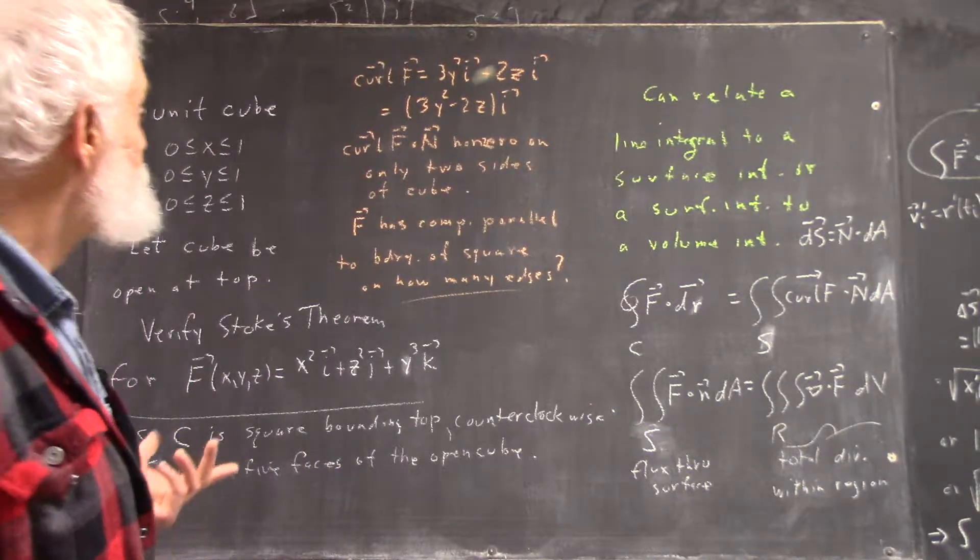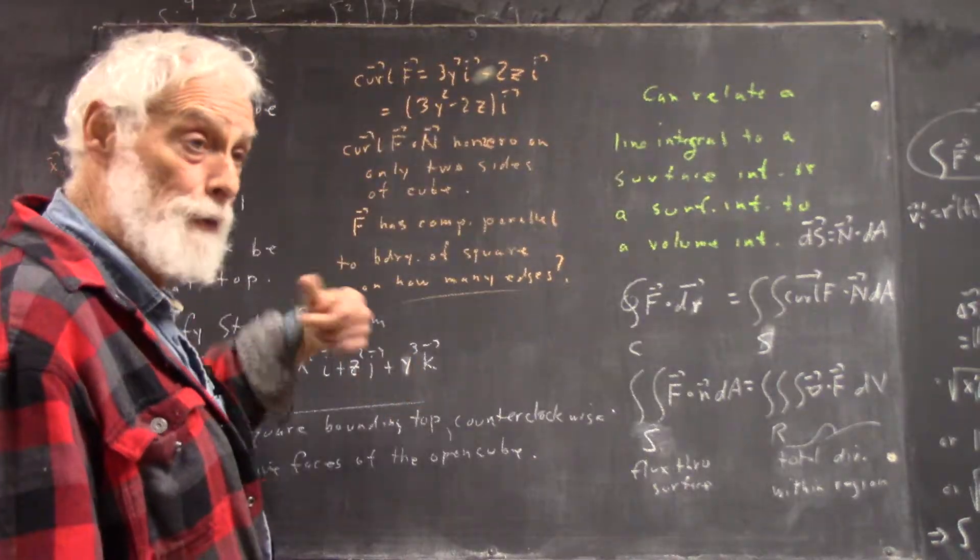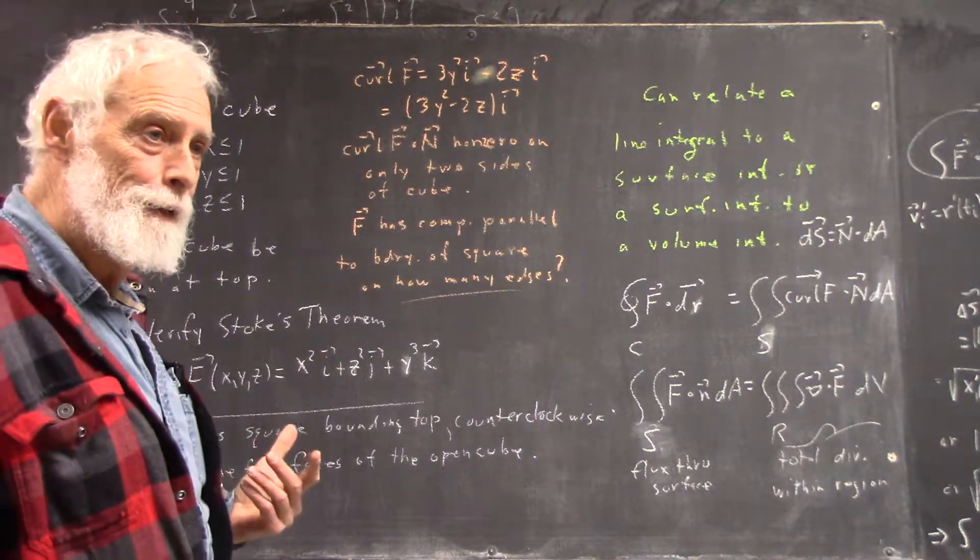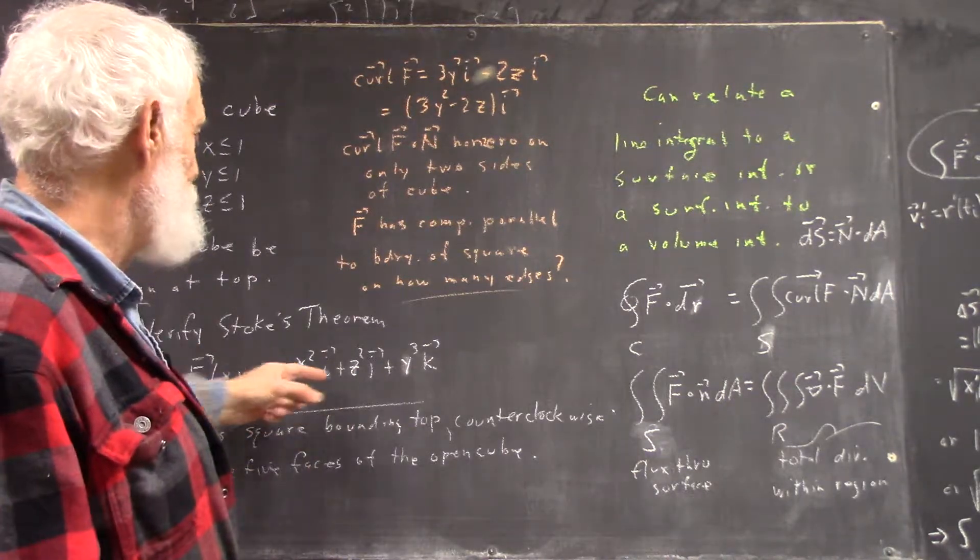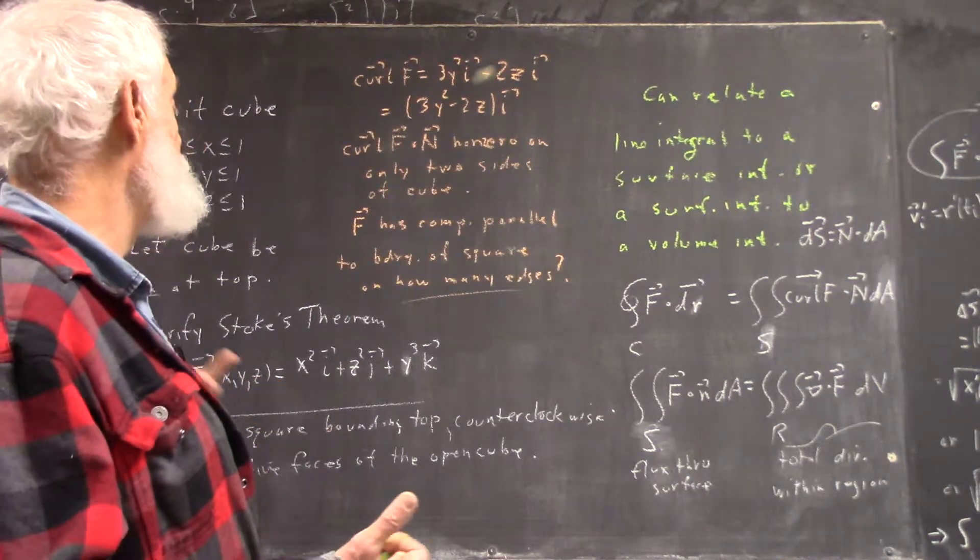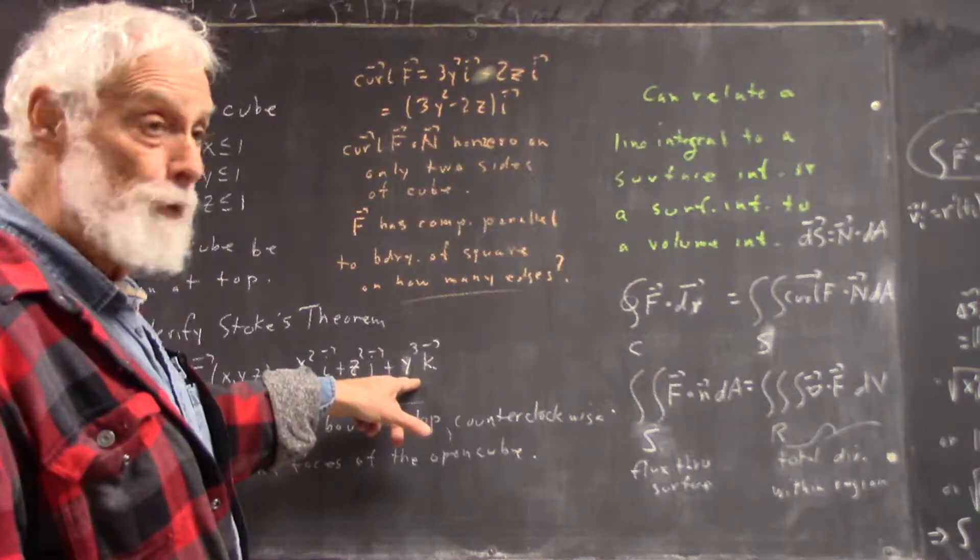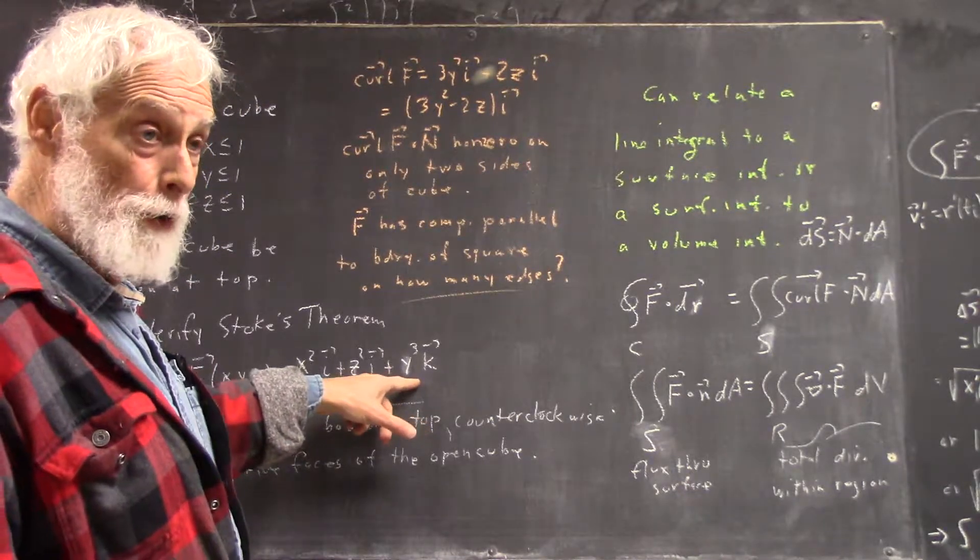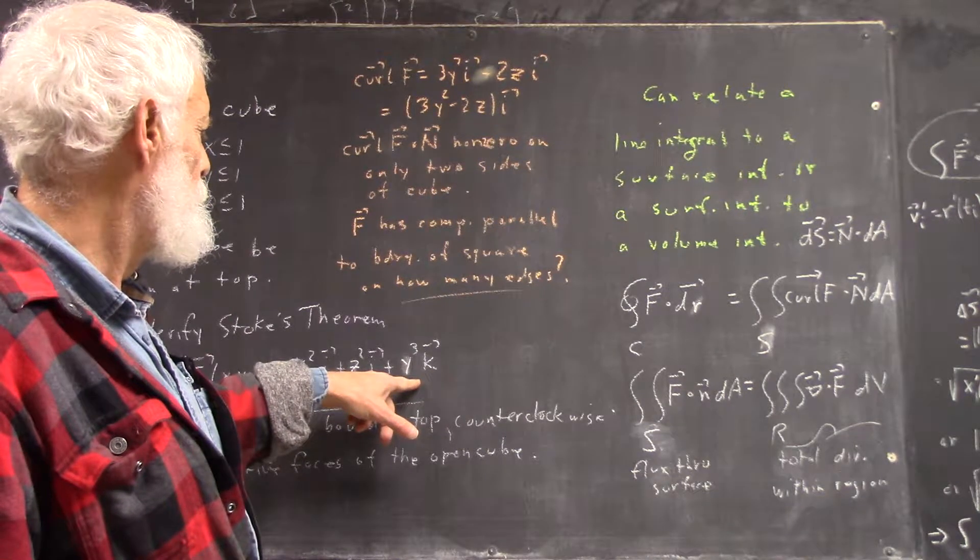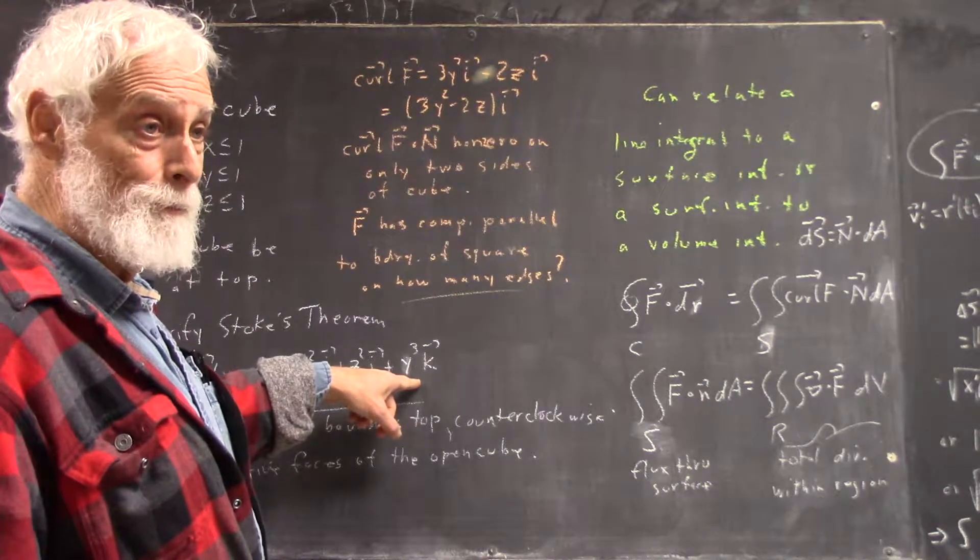So in the first place, the curl of F is this, and that's easily calculated. I said the partial with respect to I is going to give you zero except for this component, but I cross I is zero. The partial with respect to J is going to give you a non-zero only here, J cross K being negative I. Wait a minute, I think I might have written that down wrong.